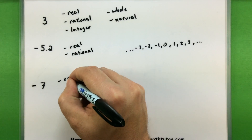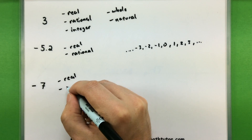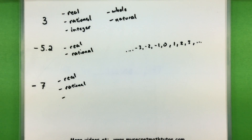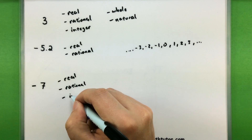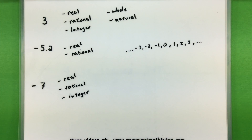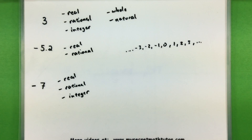Negative 7 is a real number. We can definitely write this one as a fraction — just put it over 1 — so it's rational. Is it an integer? Yes it is; it happens to be negative 7, so it falls further down the list, but it is an integer. Is it a whole number? The answer is no, because the whole numbers only include zero on up. So negative 7 is real, rational, and an integer.